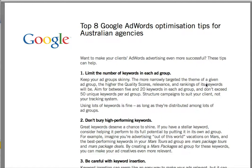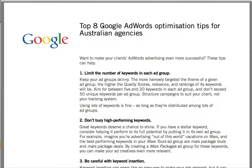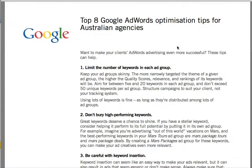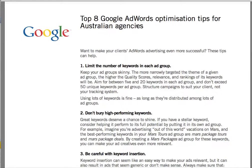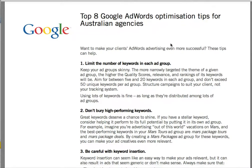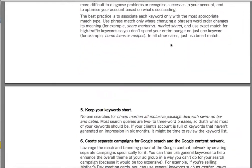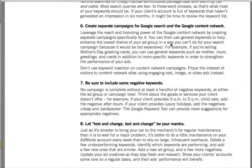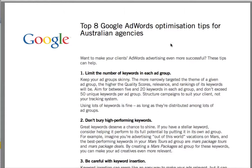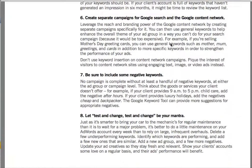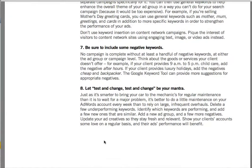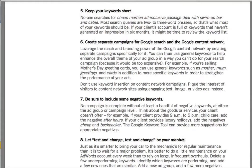So if you're running an AdWords campaign, as a reseller for Google, they give us access to different documents and industry best practices, and this Top 8 Google AdWords Optimization Tips for Australian Agencies is one of those documents. It's available on this page so that you can download and print out this document for yourself. It is the document we use when we conduct our free audits of clients' AdWords campaigns, although we do have a ninth item that we add, which is that you need to have Google Analytics installed so you can see the performance on your website.